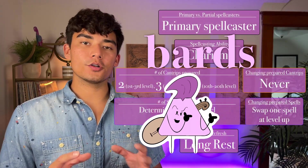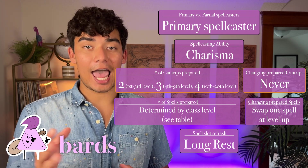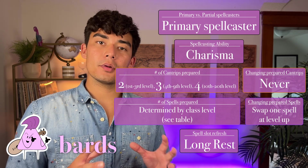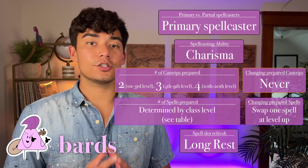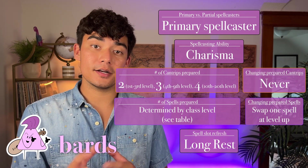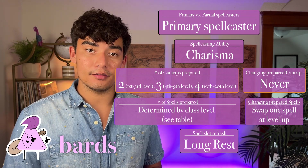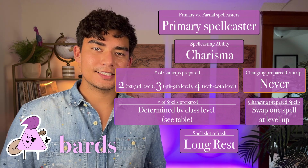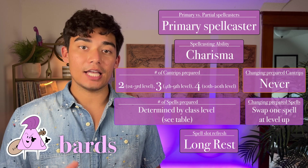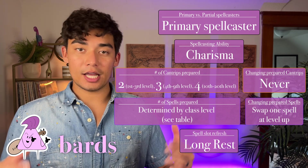Bards are primary spellcasters, meaning they gain level 1 through 9 spell slots as they level up. Their spellcasting ability is charisma. The number of cantrips they can prepare increases from 2 to 4 as they level up, and they cannot change their prepared cantrip list. The number of spells they can prepare is determined by their class level — check the bard class table for specifics. You can swap one prepared spell as your character levels up, and spell slots refresh after a long rest.